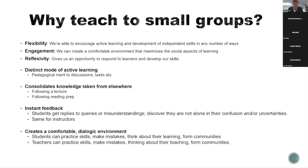Why do we teach small groups? It's the best way to facilitate discussion and collaboration and allows students to question things in a comfortable environment. Small groups provide flexibility — we can encourage active learning and develop independent skills. They provide engagement between instructor and learner, creating a comfortable environment that maximises the social aspects of learning. And they provide reflexivity: they give us an opportunity to respond to students within and after the lesson, and an unbridled opportunity to develop our own skills. Being a reflective instructor is vitally important for the success of small group learning.